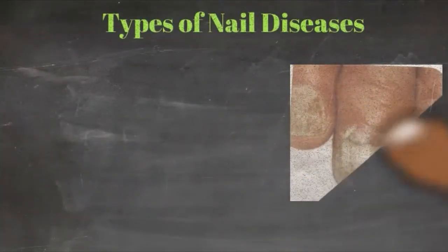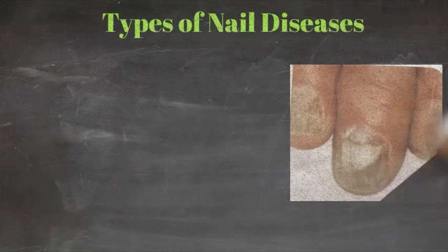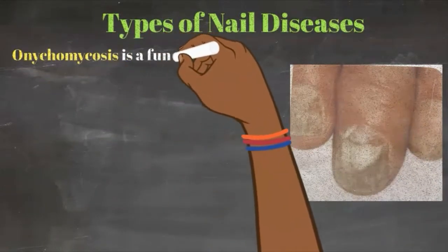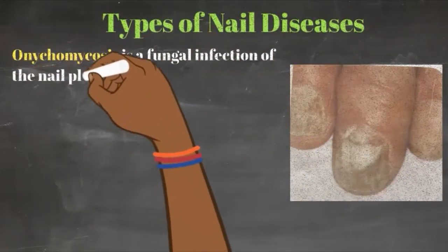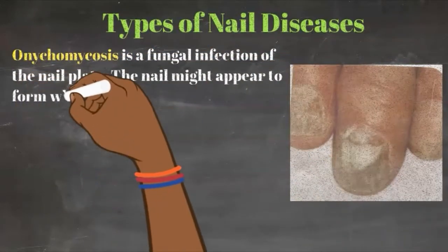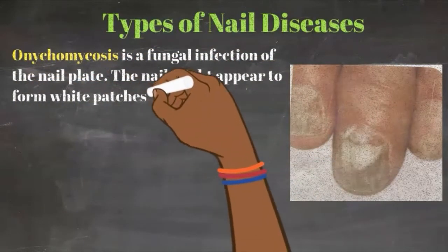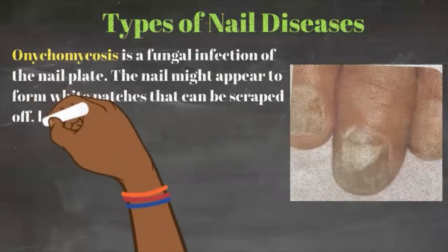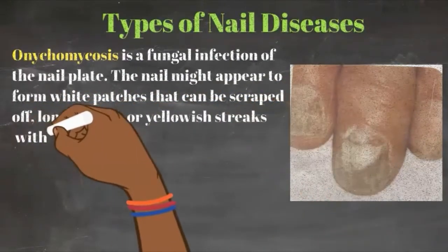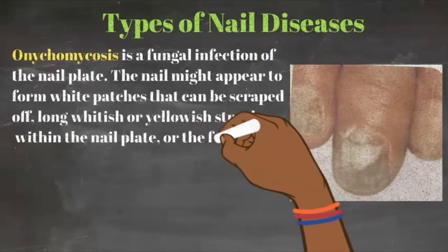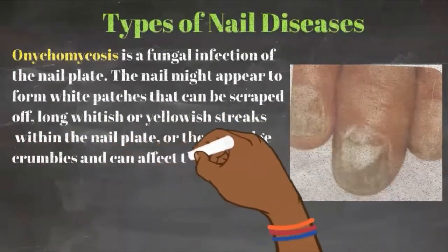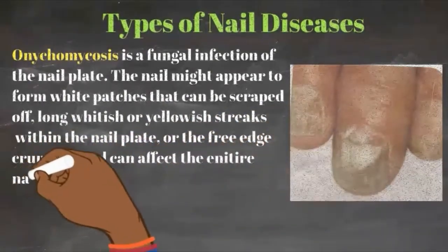Lastly, we have onychomycosis. This is a fungal infection of the nail plate. The nail might appear to form white patches that can be scraped off, or long whitish or yellowish streaks within the nail plate. You might also notice the free edge crumbles and it can affect the entire nail plate. Clients should seek proper diagnosis and treatment from a physician, and we should not be performing any services on this type of nail.